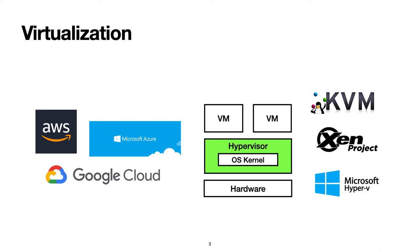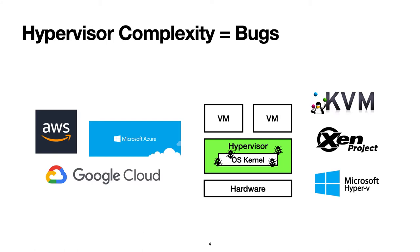Popular hypervisors include KVM, Xen, and Hyper-V, deployed by cloud vendors on server multiprocessor hardware. Hypervisors are increasingly complicated to support the performance and functionality required by cloud computing workloads. The popular hypervisors include a full operating system kernel to reuse its existing functionality. However, the increasing complexity in hypervisors results in more bugs.